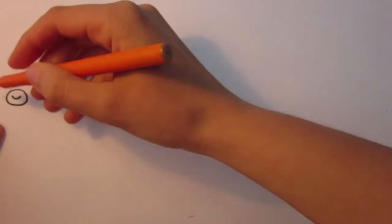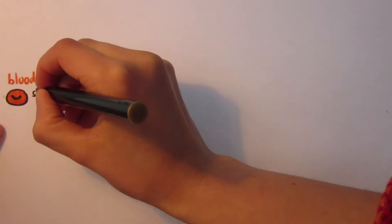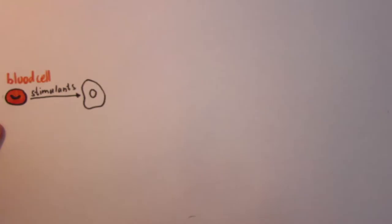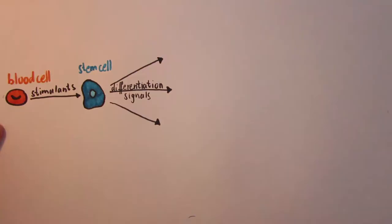One way of creating organoids starts with blood cells obtained from patients. By administering the right stimulants, these blood cells can turn into stem cells. Stem cells are unspecialized cells that can differentiate into all kinds of cells. With the right conditions and techniques, these stem cells can then be formed into an organoid.